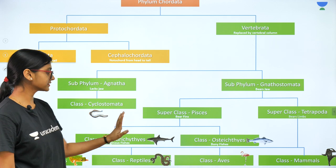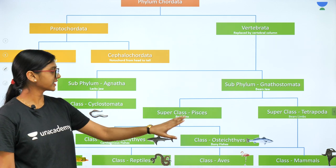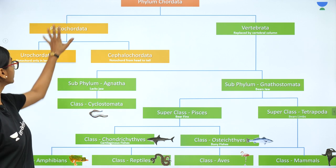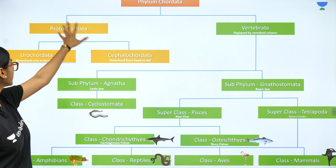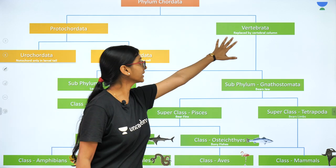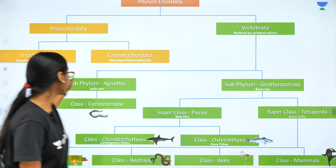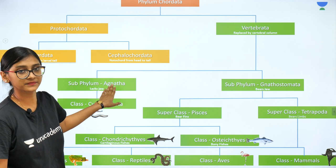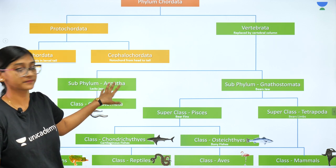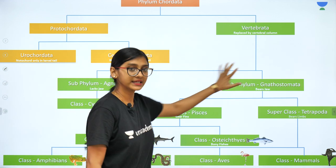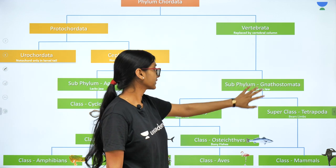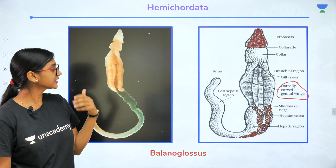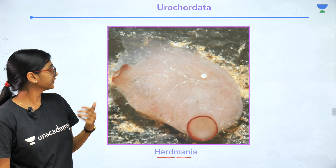It is quite easy to understand the different classifications. We have seen Protochordata, Urochordata, Cephalochordata, and Vertebrata. Under Vertebrata we have seen Agnatha — examples: hagfish and lamprey — and Gnathostoma. These are the important features of different organisms.